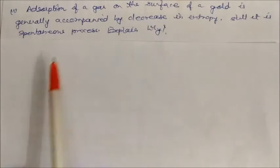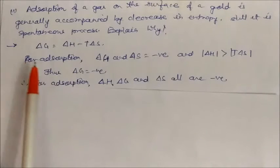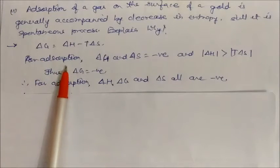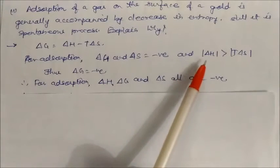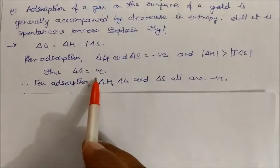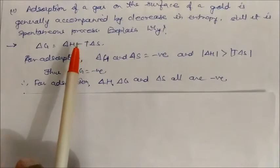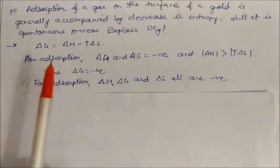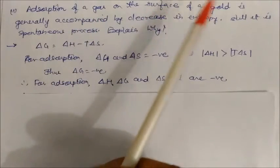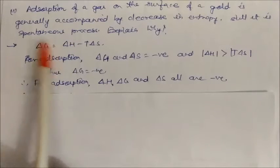Adsorption of gas on the surface of gold is generally accompanied by decreasing entropy. Still it is a spontaneous process. Explain why. For this we will take the equation ΔG = ΔH - TΔS. For adsorption, ΔH and ΔS should be negative, and ΔH must be greater than TΔS. Thus ΔG will be negative. If magnitude of ΔH is more negative than TΔS, delta G will automatically be negative. For adsorption, ΔH, ΔG, ΔS all are negative conditions. Then the adsorption of gas on the surface of gold will be generally accompanied by decreasing entropy, and it becomes spontaneous because overall ΔG is negative.